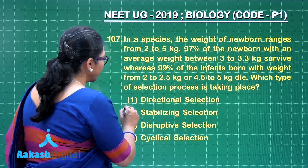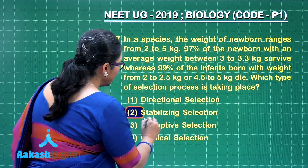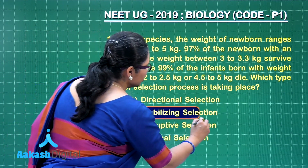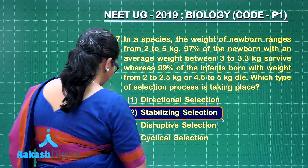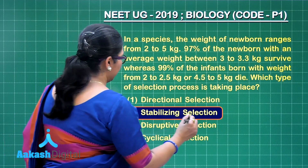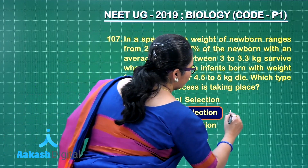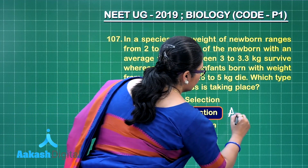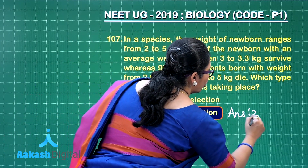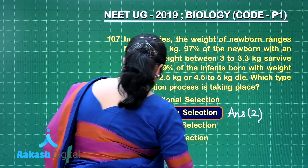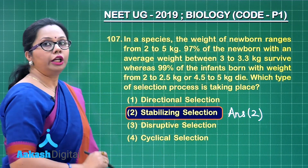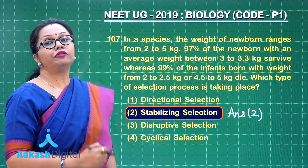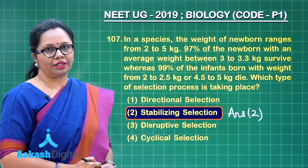So the correct answer here is stabilizing selection, that is option 2. Now let us move ahead with the next question.